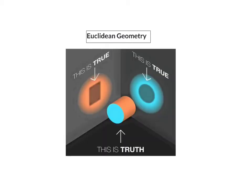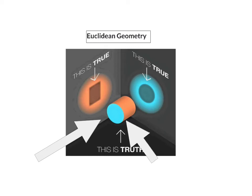For example, if you look at a picture of a cylinder and you look at it from one angle, you will say that you are seeing a circle. But if you look at it from another angle, you might say that you are seeing a square. Both of these statements are true, but the whole truth is that it's a cylinder.